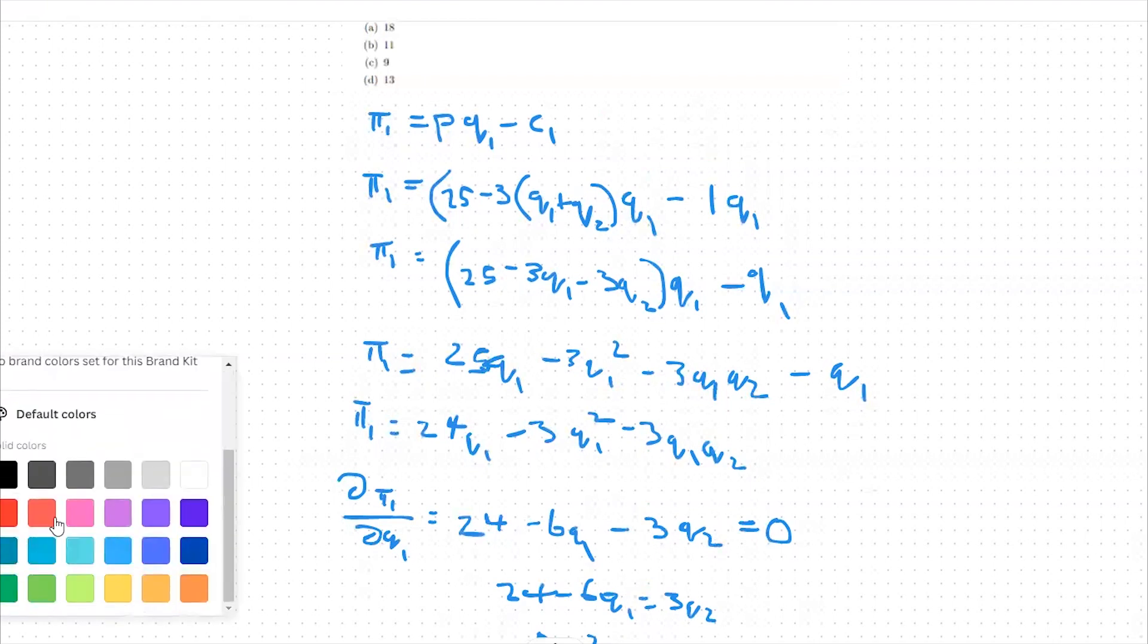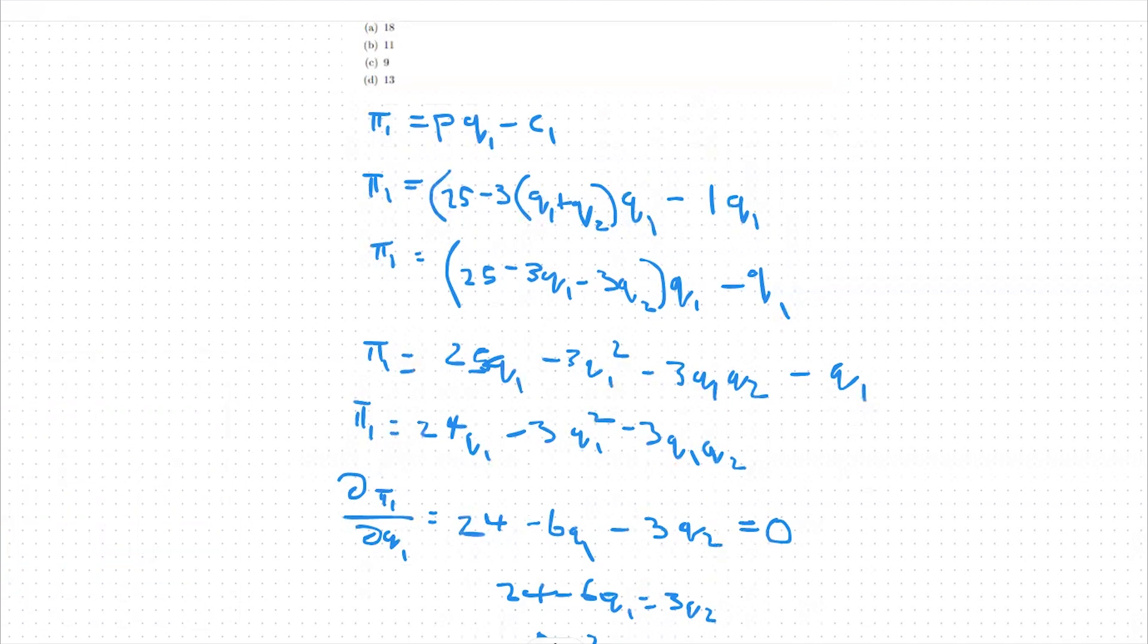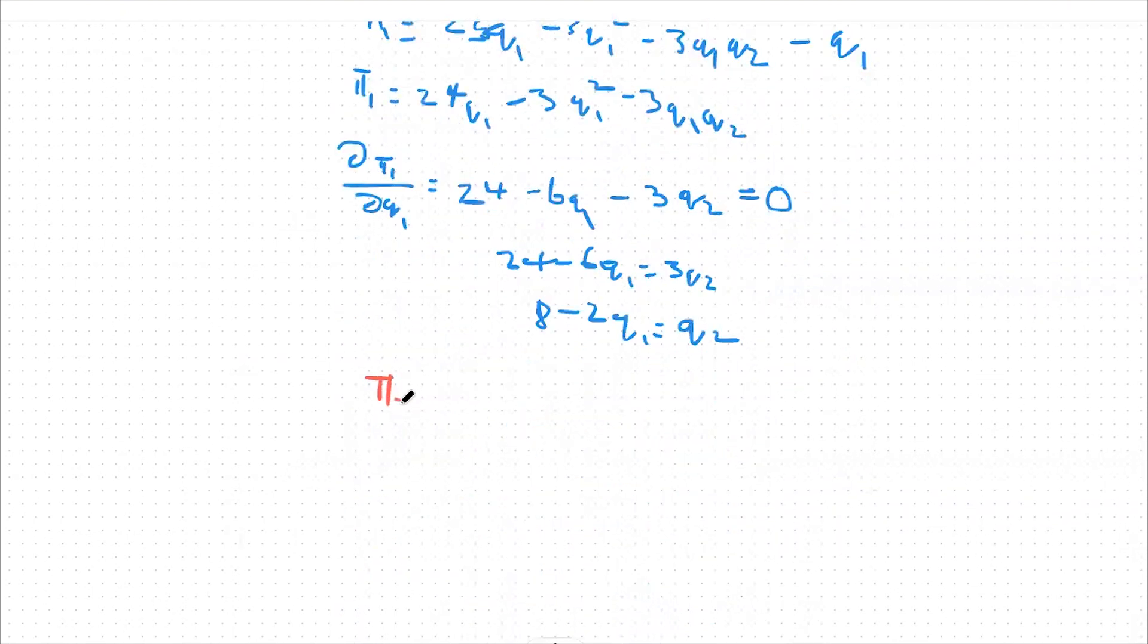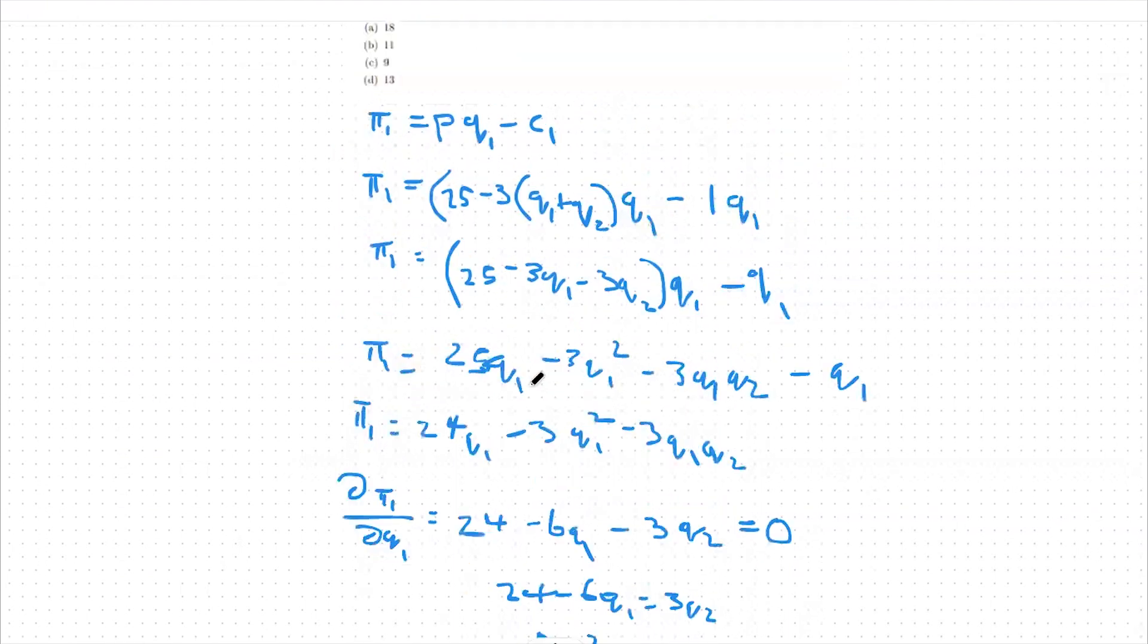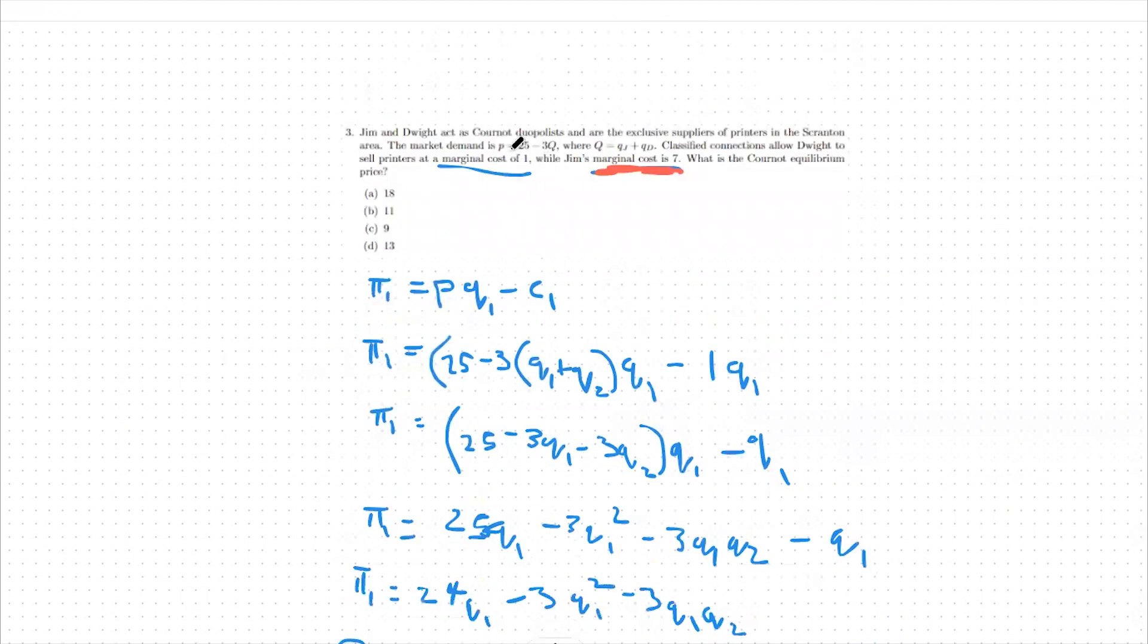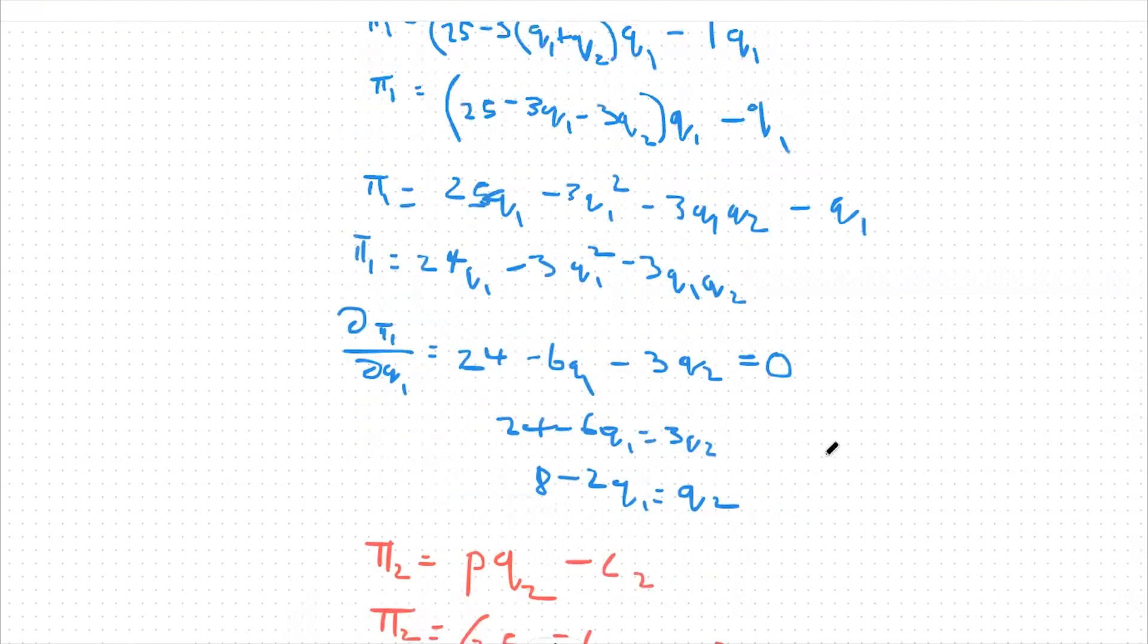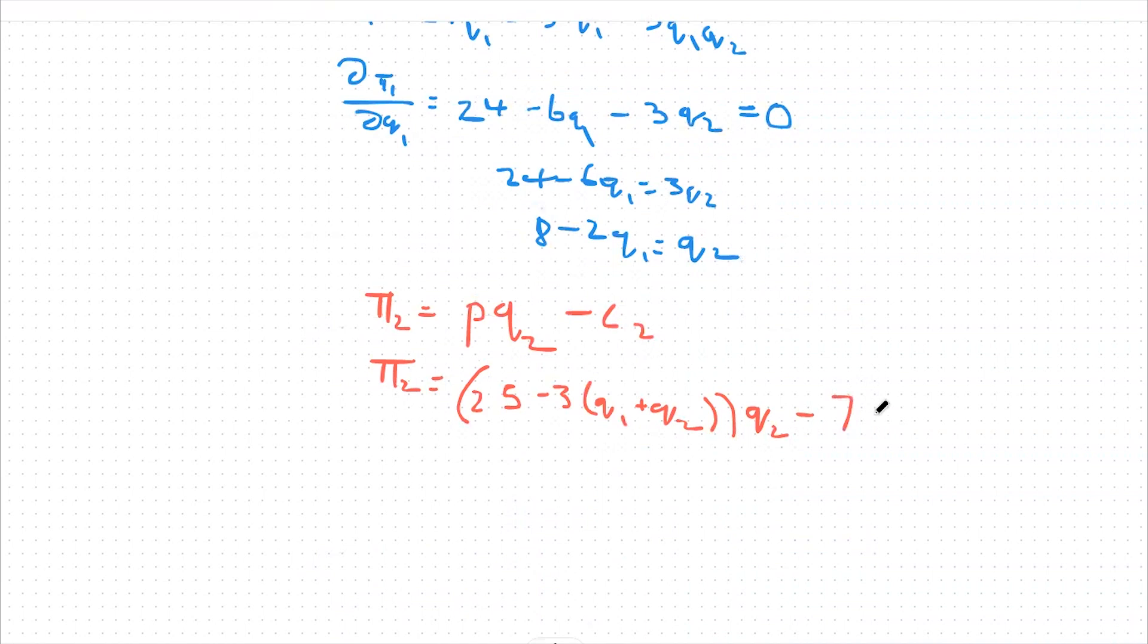What I'm going to do now is do the same process for profit 2. So I'm going to take that same framework and I'm going to say now we're going to look at firm 2's marginal cost and build their profit function and then maximize. So profit 2 is equal to the price, again, that the market demand is at. So this price isn't going to change between our suppliers. And then we're going to say times q2 now because we're maximizing profit 2, and then minus our cost associated with production for firm 2. So that's going to be profit is equal to now still 25 minus 3 times q1 plus q2, and then we're going to multiply instead this whole thing by q2 minus our marginal cost of 7 for firm 2 times q2.